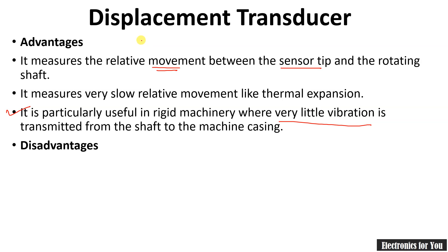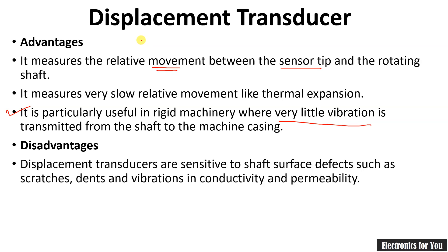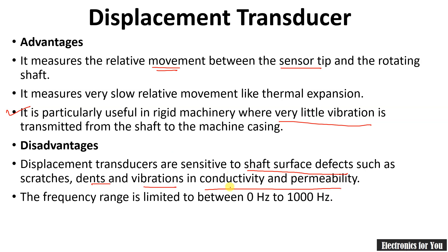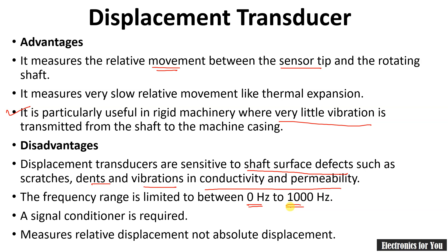The disadvantages of displacement transducer: they are sensitive to shaft surface defects such as scratches, dents, and variation in conductivity and permeability. The frequency range is limited from 0 hertz to 1000 hertz. A signal conditioner is required in the case of a displacement transducer. It measures relative displacement and not absolute displacement.